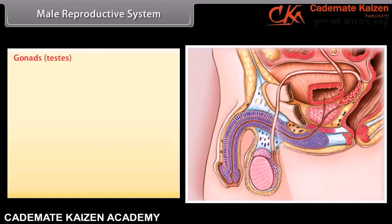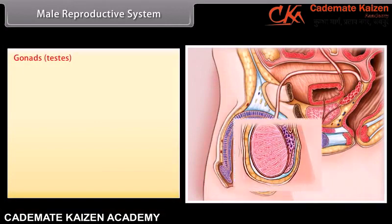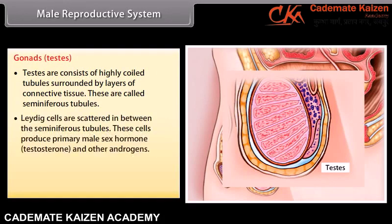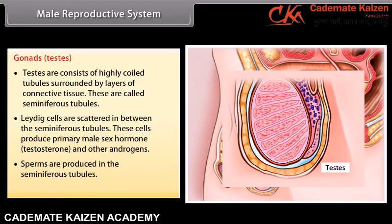The testes consist of highly coiled tubules surrounded by layers of connective tissue, called seminiferous tubules. Leydig cells are scattered in between the seminiferous tubules. These cells produce the primary male sex hormone testosterone and other androgens. Sperm are produced in the seminiferous tubules.